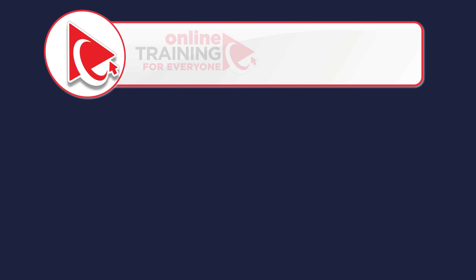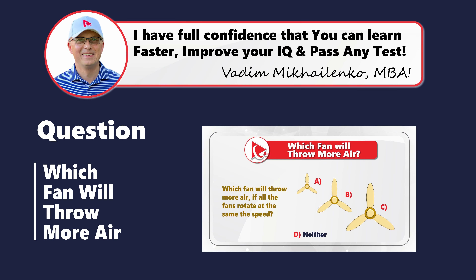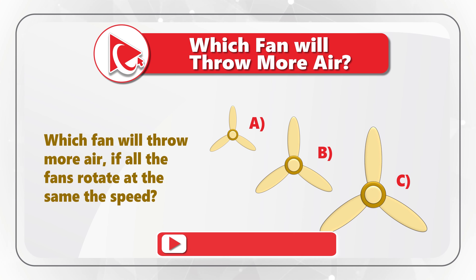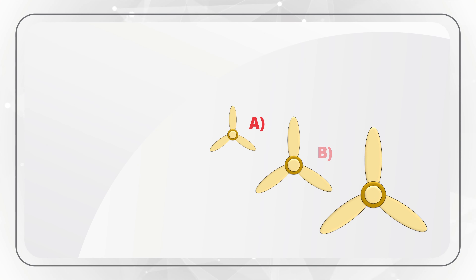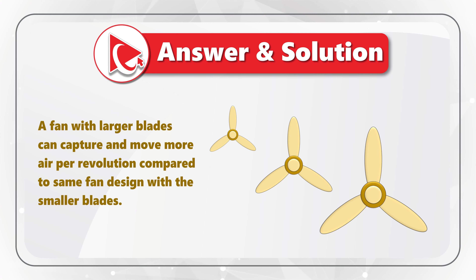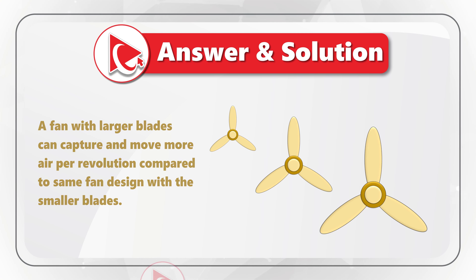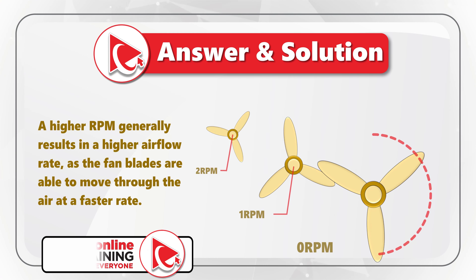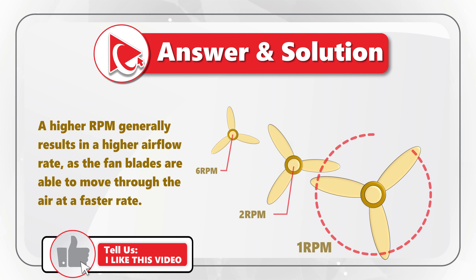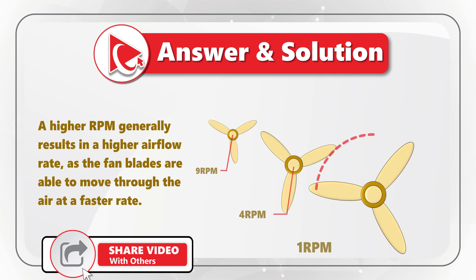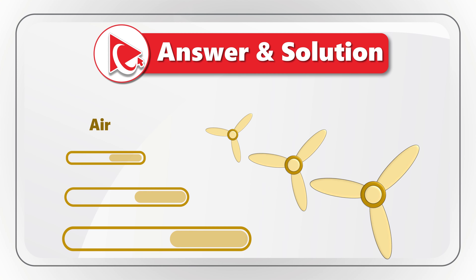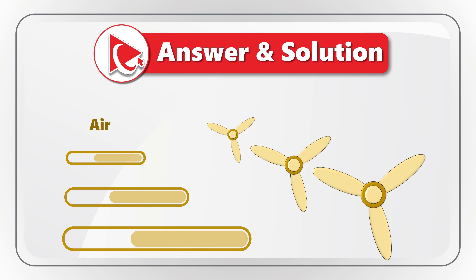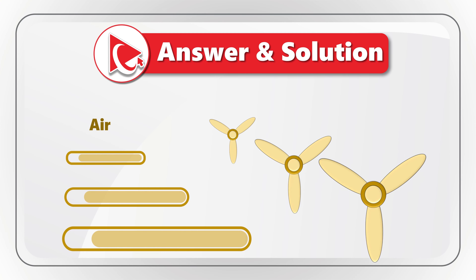I am moving forward to share my version of the answer. As you might be aware, there are two key factors that determine air flow rate. The first is the size of the fan's blades. The second is the rotational speed of the fan, measured in RPMs — revolutions per minute. A fan with larger blades can capture and move more air per revolution compared to a fan of the same design with smaller blades.